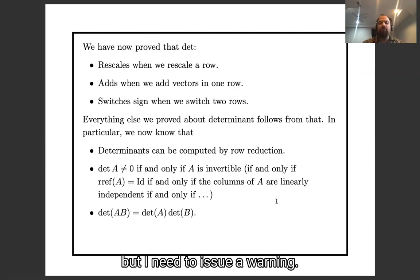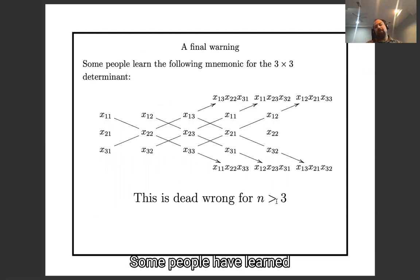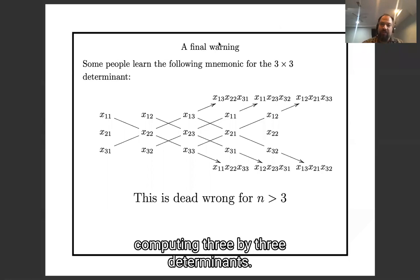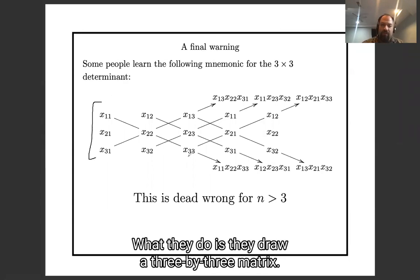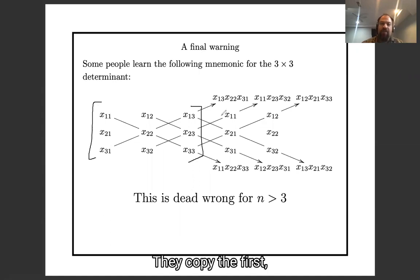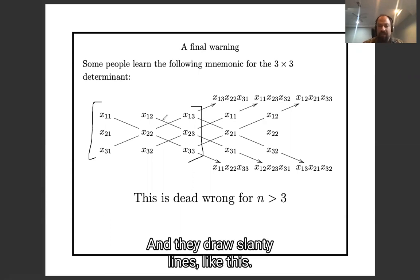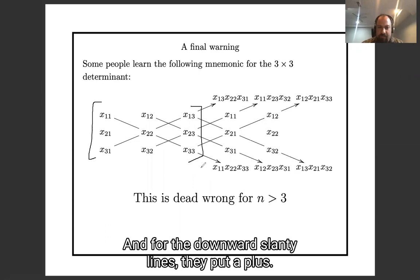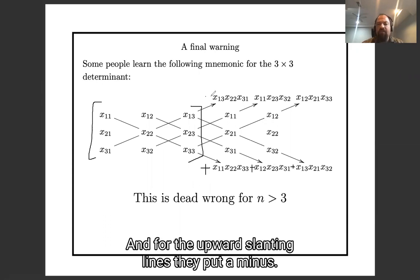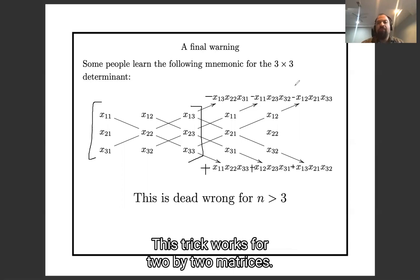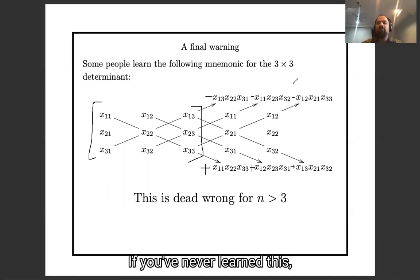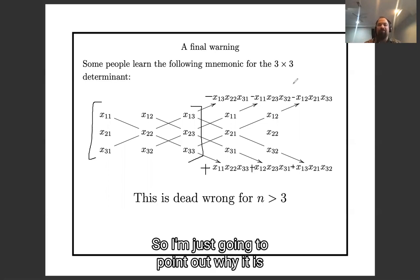This is the main moral of this lecture: I have given you a formula for the determinant and checked it has all these properties. I would like to stop there, but I need to issue a warning. Some people have learned the following trick for computing three by three determinants — and I wish they hadn't. They draw the matrix, copy the first and second columns over, draw slanty lines, write down the product of each of six slanty lines, and put plus for downward-slanting and minus for upward-slanting. This trick works for two by two and three by three matrices, but it stops working after that.